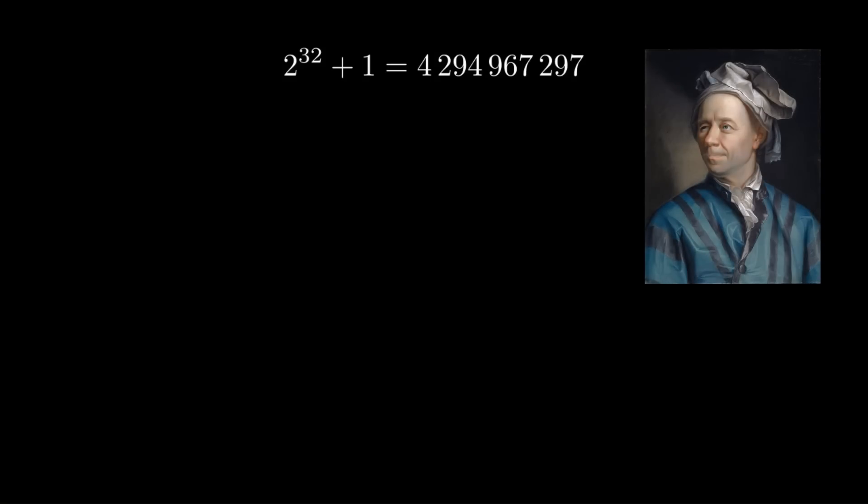But then, in 1732, none other than Euler came along, and he found a factorization. So he found that it factors as a product of two primes, the smaller one of which is 641.